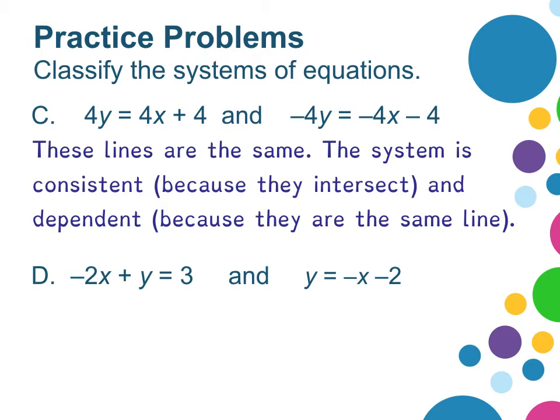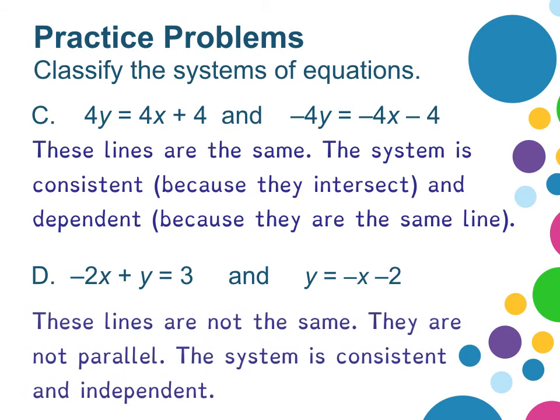In example D, we find out the lines are not the same. They are not parallel, because they don't have the same slope. Therefore, the system is consistent. They will intersect. And independent. They will intersect in exactly one point.